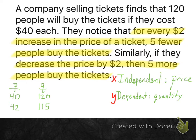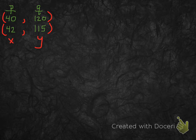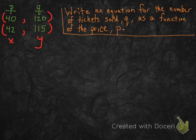The most important part is that this is a linear relationship. All those words on the previous page basically boil down to two points: (40, 120) and (42, 115), and the fact that this is a linear relationship. Now we're going to write an equation for this linear relationship.